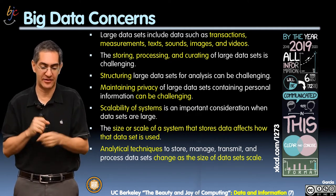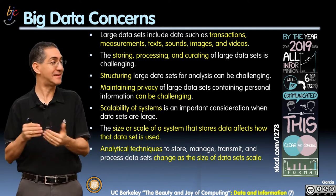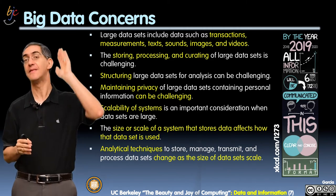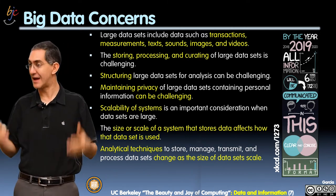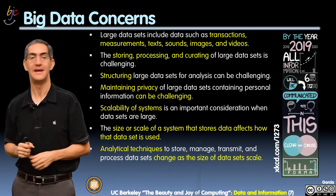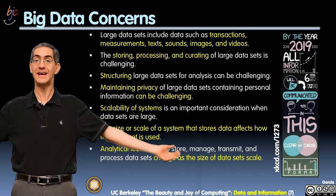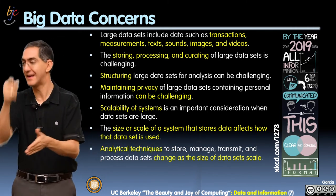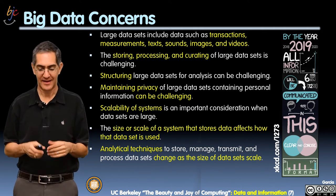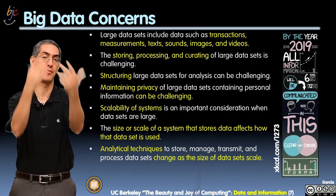Analytical techniques to store, manage, and transmit data change as the size of data changes. When data is small you can do things cheap and dirty, but as data size grows you need really efficient, fast, low-latency, high-bandwidth approaches. A great example: Amazon Web Services lets you upload data to them, but users have found it's actually easier to put terabytes of data on a hard drive and ship it via FedEx than to pump it through the wire. Shipping hard drives is sometimes actually faster — so you have to change your model as data gets too big to stream.